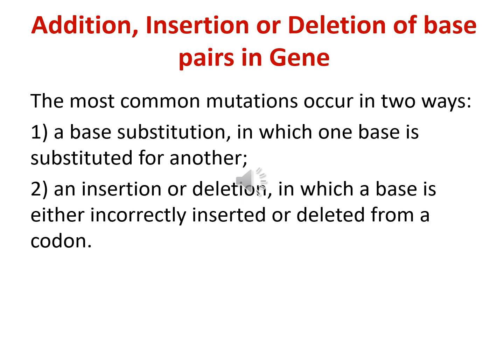The processes by which mutations happen naturally or during cell division are addition, insertion or deletion of base pairs in genes or DNA. The most common mutation occurs by base substitution, in which one base is substituted for another, causing a different amino acid to form and ultimately a different protein to form. Another type is insertion or deletion, in which a base is either incorrectly added or deleted from a codon, so that a different amino acid forms and it changes the protein.